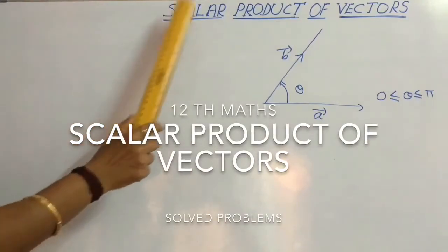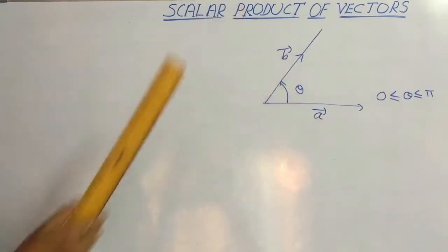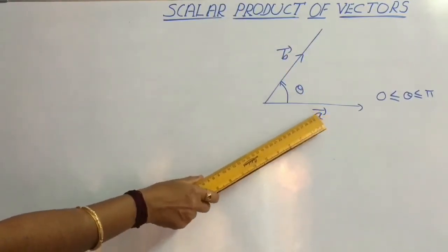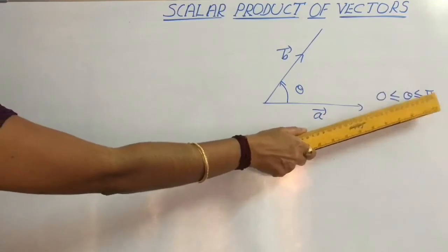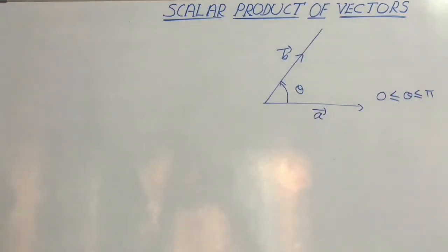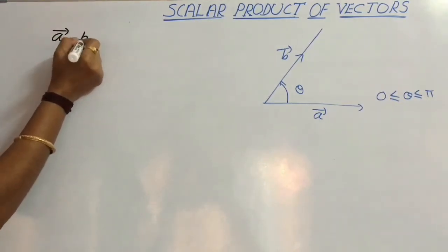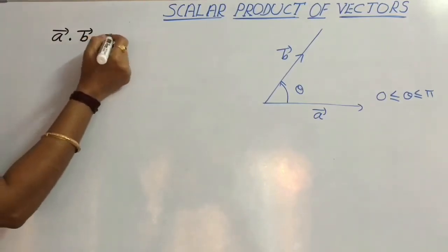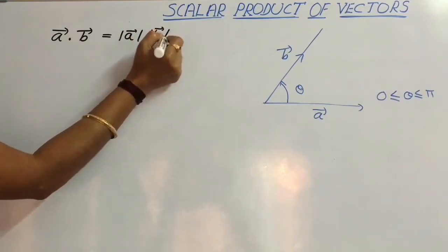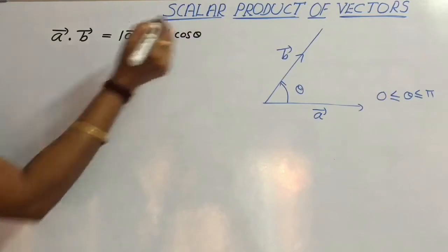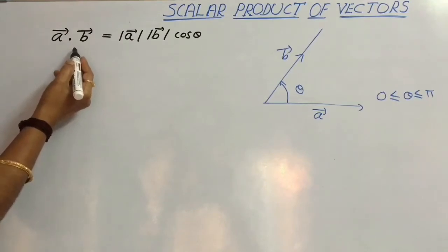Today let us consider scalar product of vectors. Consider two vectors, vector A and vector B, where theta is the angle between them, with 0 ≤ theta ≤ pi. The scalar product of vector A and vector B, denoted by vector A dot vector B, is equal to mod of vector A into mod of vector B into cos theta. This is called scalar product because the result is a scalar.